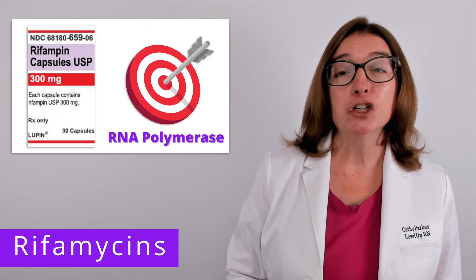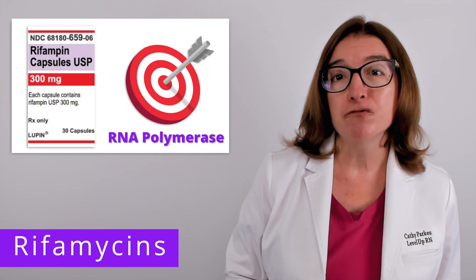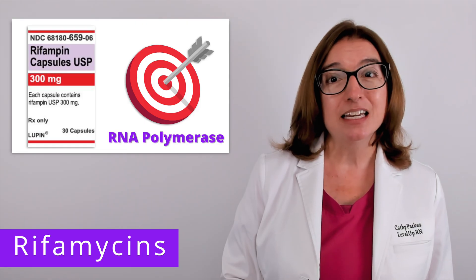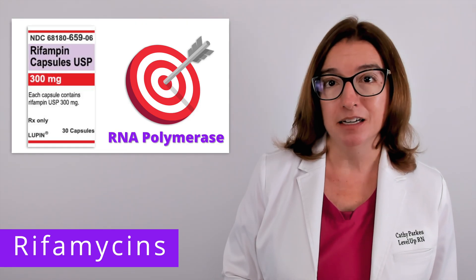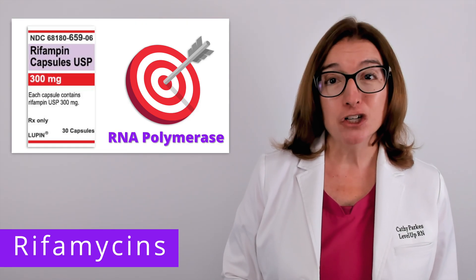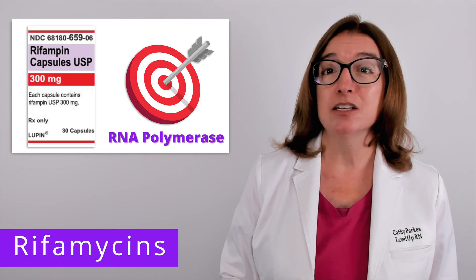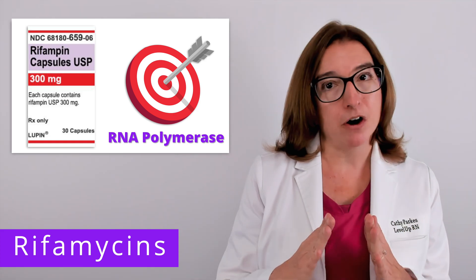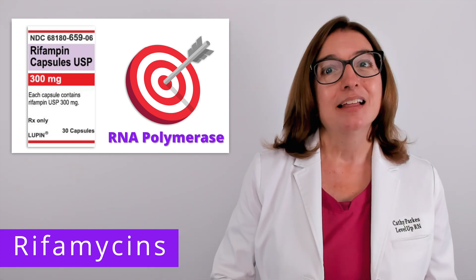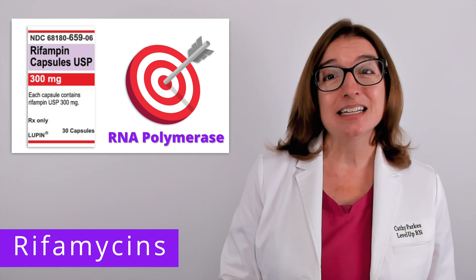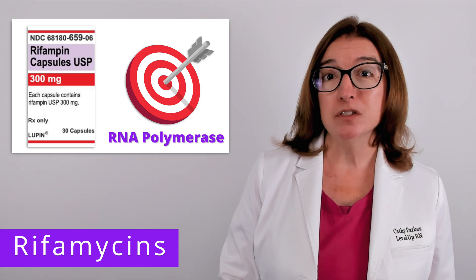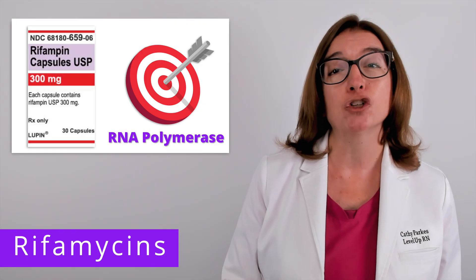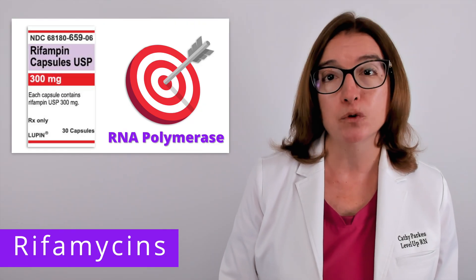Rifamycins, which include the drug rifampin, block RNA polymerase activity in bacteria. This in turn prevents the transcription of DNA into mRNA. This drug class is primarily used in combination with other antibiotics in the treatment of tuberculosis.